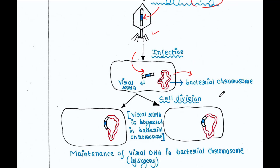The bacteria undergo cell division, and the bacterial chromosome — along with the integrated viral DNA — is replicated and distributed among the daughter cells. Maintenance of viral DNA within the bacterial chromosome is called lysogeny, and in this way we can obtain our gene of interest in an amplified amount.